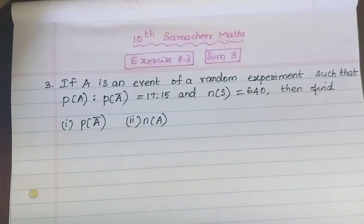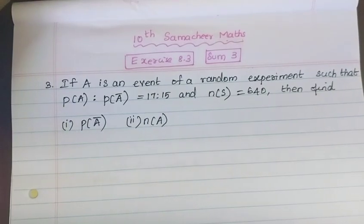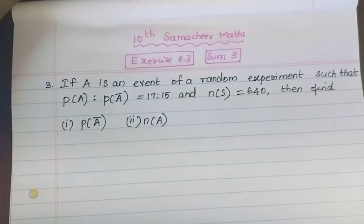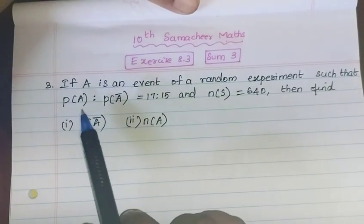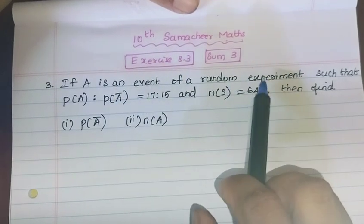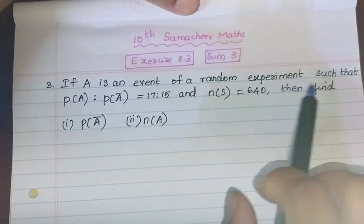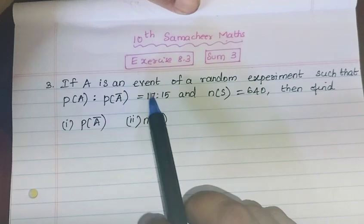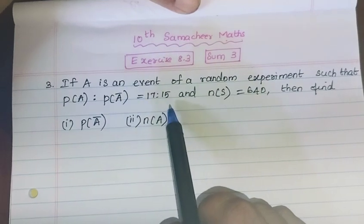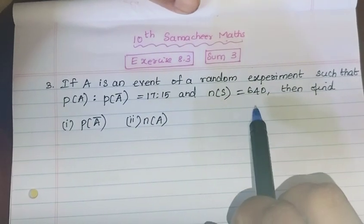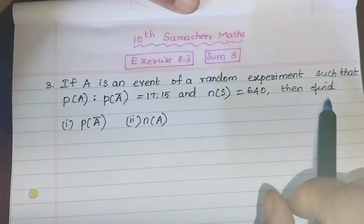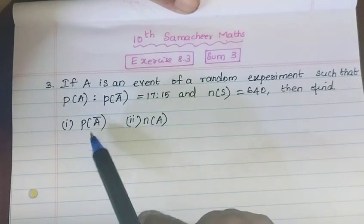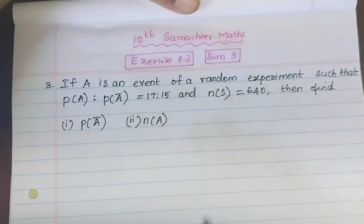Students, in the 10th standard Maths exercise 8.3, sum number 3. Probability: if A is an event of a random experiment such that P of A to P of A complement is equal to 17 is to 15, and N of S is equal to 640, then find P of A complement and N of A.